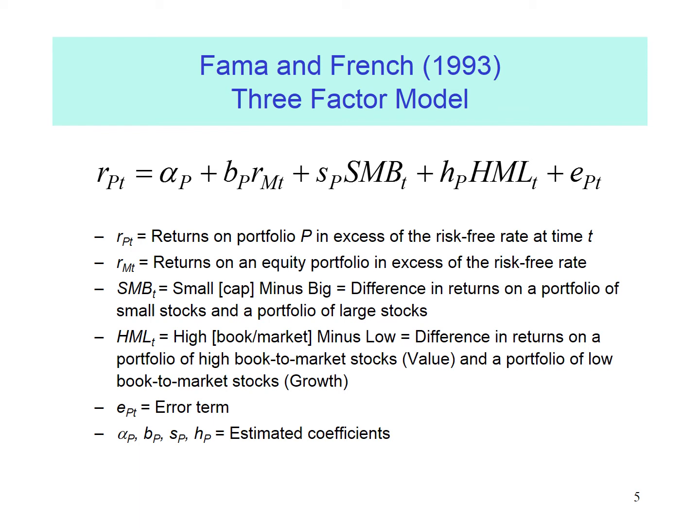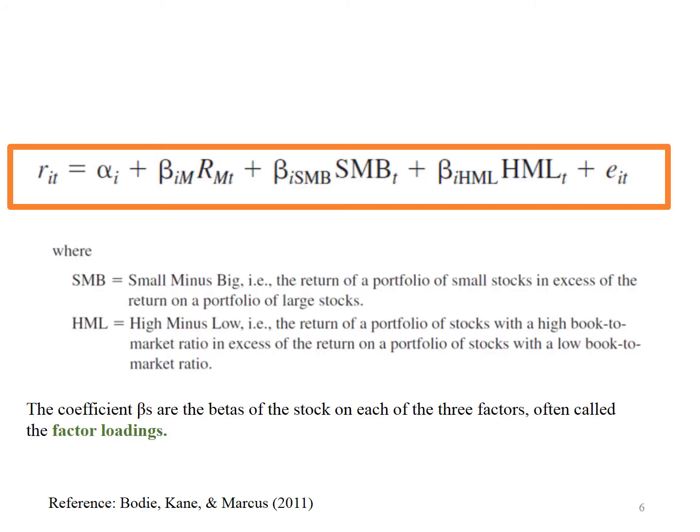This slide presents an overview of the three-factor model. SMB stands for Small Minus Big — this is the return of a portfolio of small stocks in excess of the return on a portfolio of large stocks. HML stands for High Minus Low. HML is calculated from the return of a portfolio of stocks with a high book-to-market ratio minus the return on a portfolio of stocks with a low book-to-market ratio. SMB captures elements of risk associated with firm size, while HML distinguishes risk differences associated with growth and value stocks.